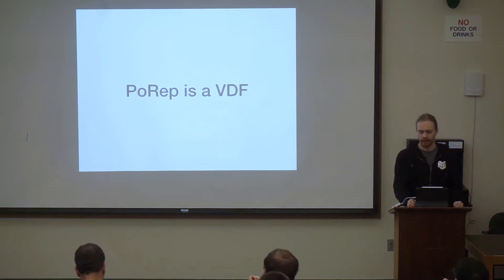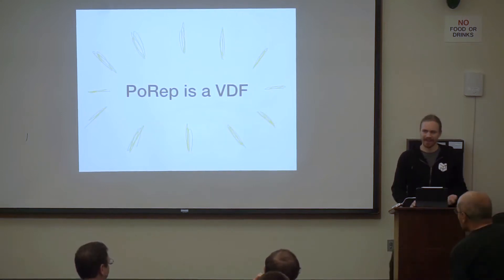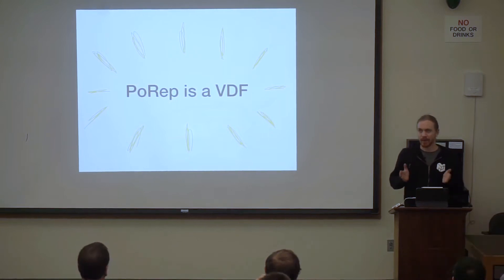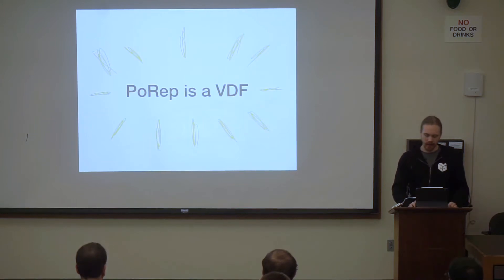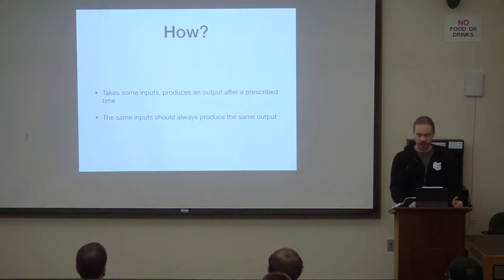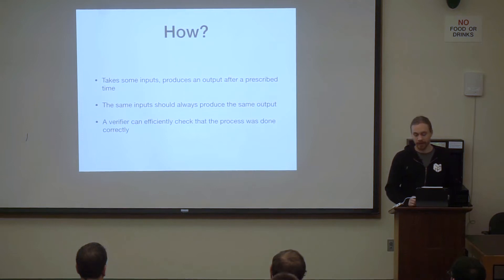So PoRep is a VDF. Basically, this whole process is forcing you to slow down an encoding such that if you're trying to recompute the encoding on the fly, you get caught. And so it takes some inputs, produces an output after prescribed time, the same inputs always produce the same output, and the verifier can efficiently check that it was done correctly. This is done with some snark Merkle-proof magic, which is actually the fast part about the whole thing.